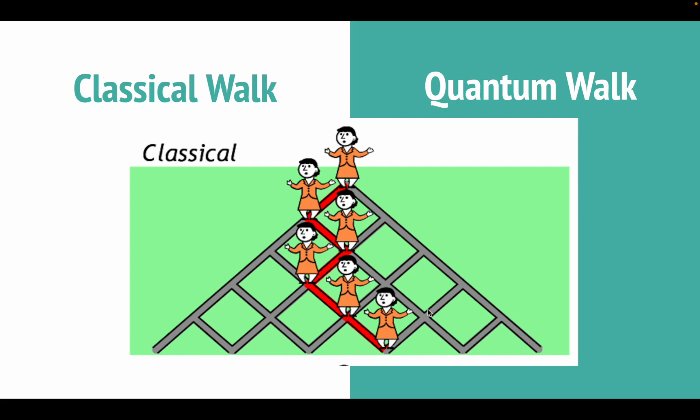To understand quantum walks, let's consider a very simple example. Suppose you're standing on a grid and you can move either left, right, up or down. In a classic random walk, you will randomly choose a direction and move to that spot.